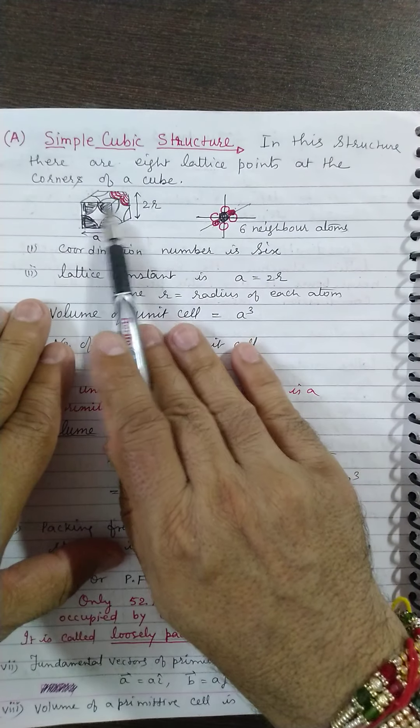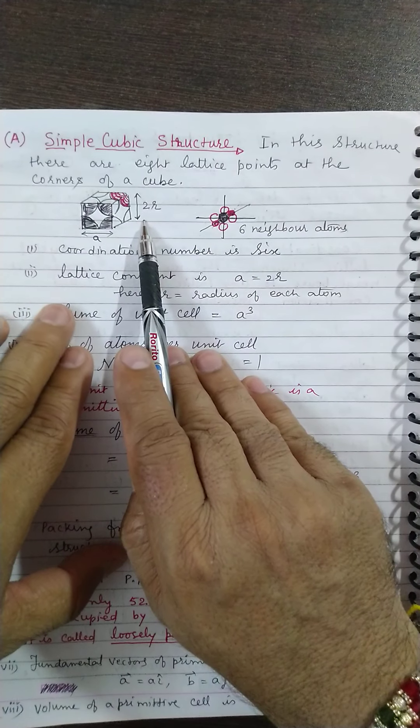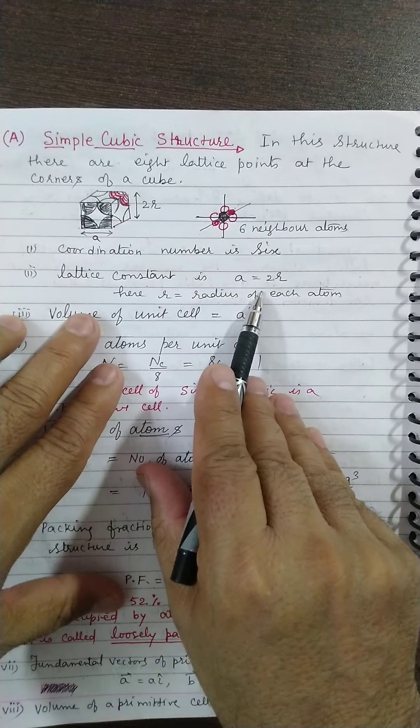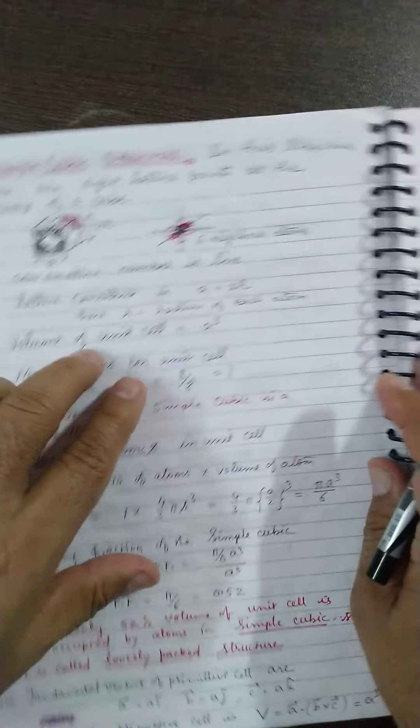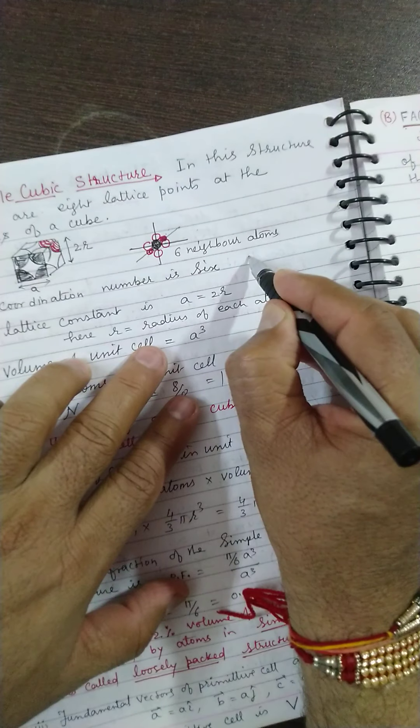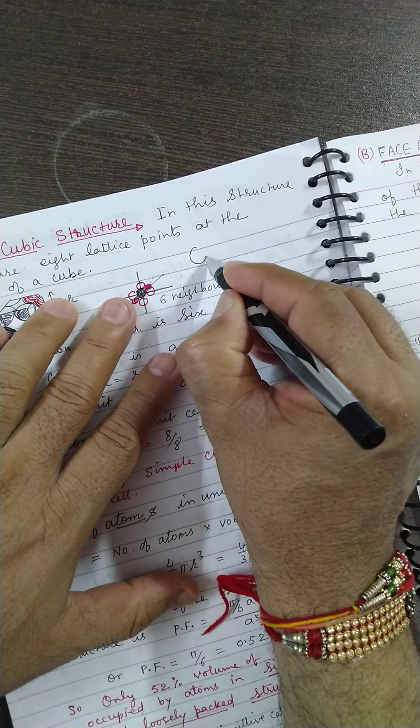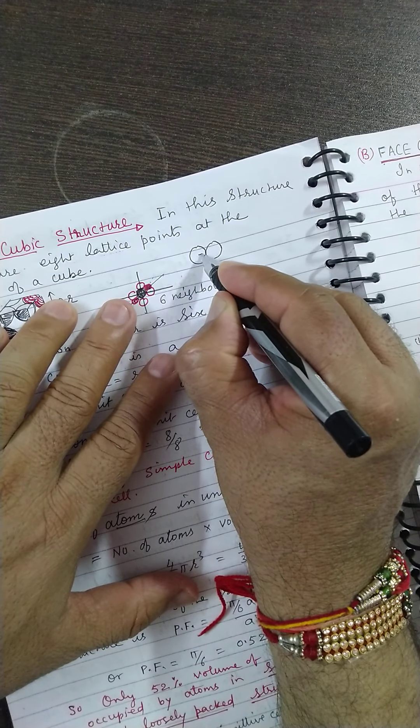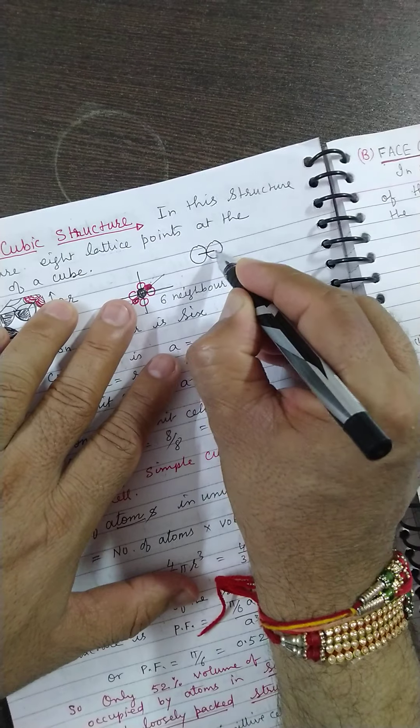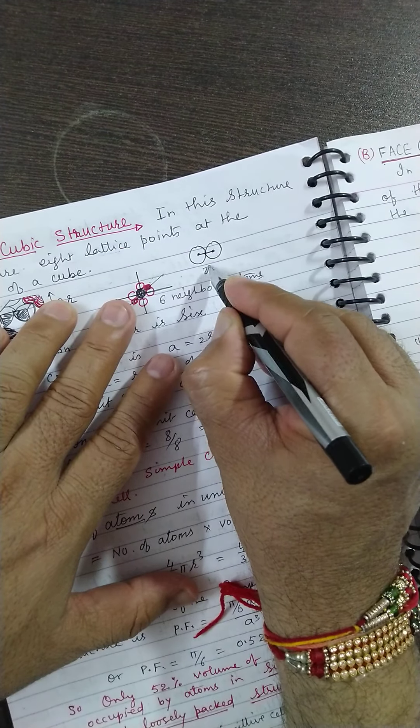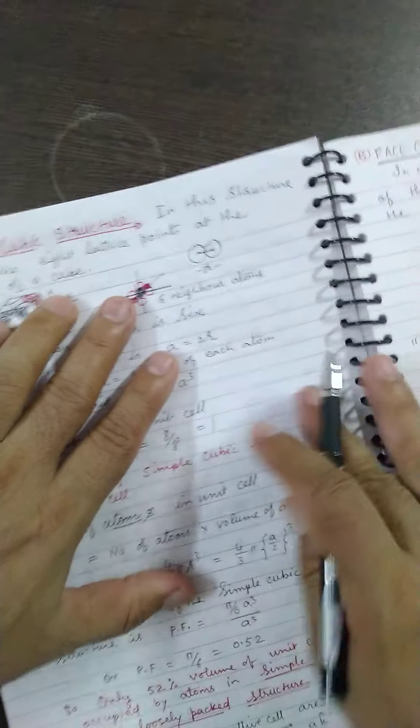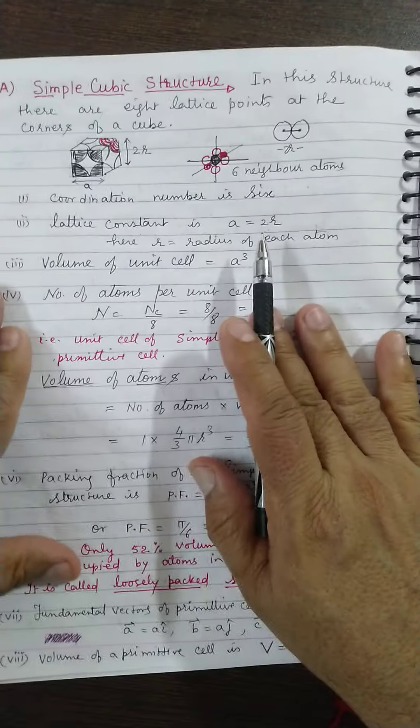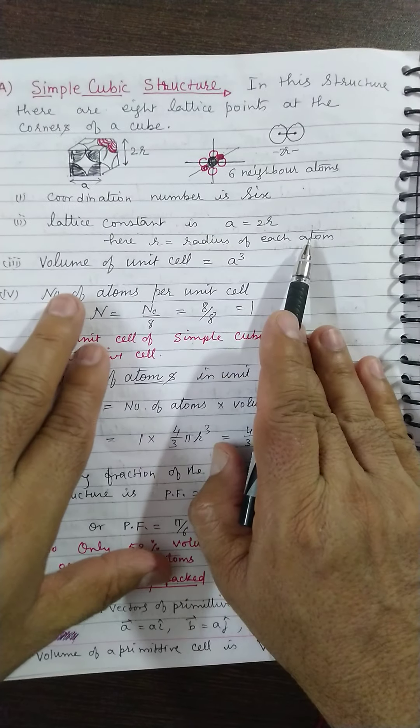There are eight corner atoms in the crystal structure. Lattice constant A will be twice the radius of each atom because when every atom touches the near one, the distance between two centers—this is lattice constant. And this is 2R. So I have written here A equals to 2R, where R is the radius of each atom.